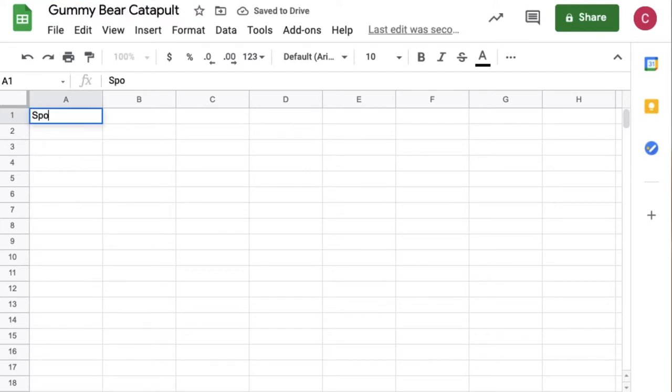We are going to set up two columns, one for catapult one and the other for catapult two. Then make a place to record the distances you measured. Make sure to say what units your distances are measured in. I'm measuring everything in inches. Next type in all the data you collected and wrote down on your piece of paper.